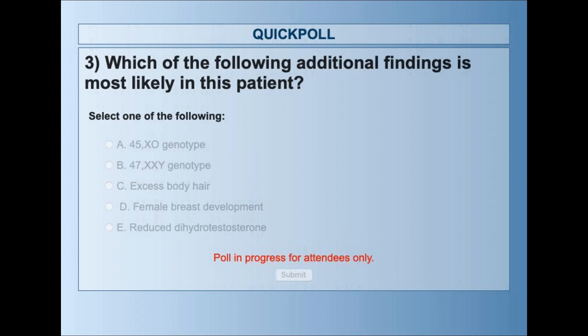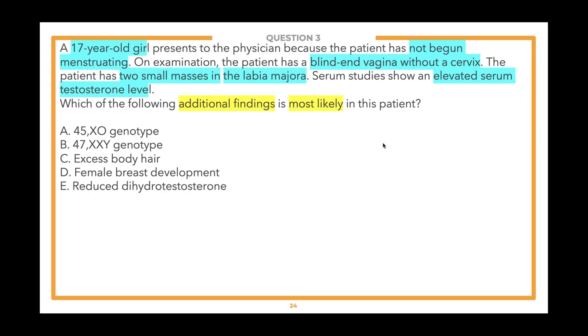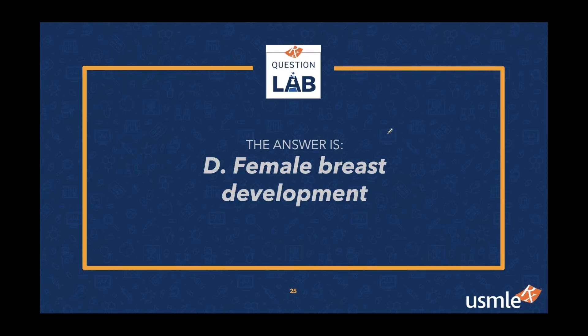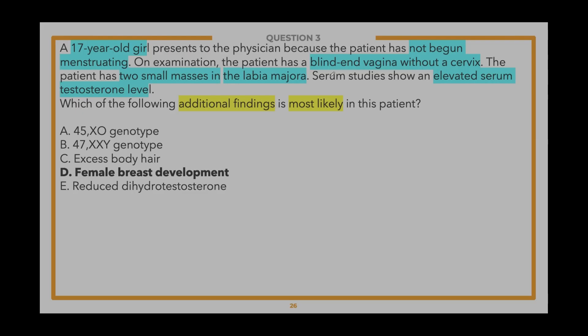Thirty-two percent selected C (excess body hair), and 26 percent selected D (female breast development). The correct answer is D — female breast development — and 26 percent of you got it right. Definitely a challenging question.